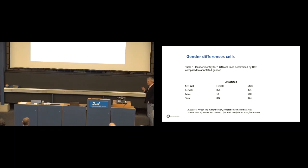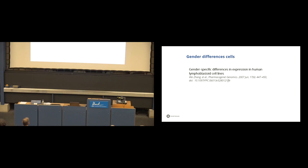So, here you see an example of 2015 where STR studies were done of 855 annotated female cells, actually 331 were males. The other way around is a little bit less, of 600 annotated males only 10 were females. So, also here in cells we misidentify the sex of the cells and sex of the cells is different. Two examples that are gender specific differences in expression in human lymphoblastoid cell lines and we do have the gender of cells really matter when screening for novel anti-cancer drugs.